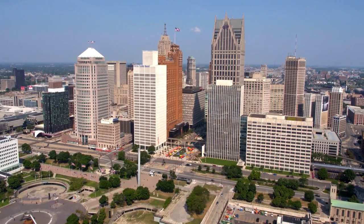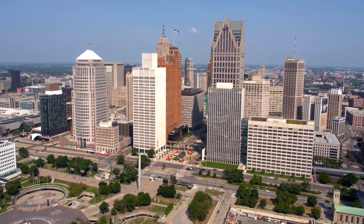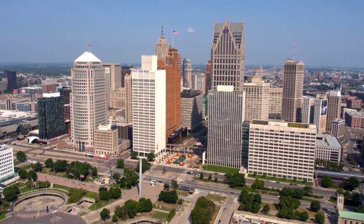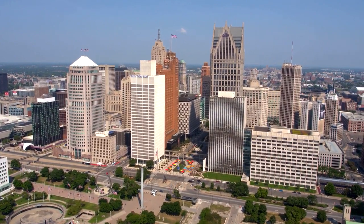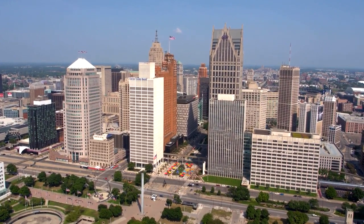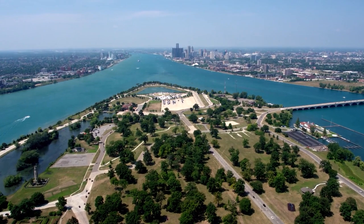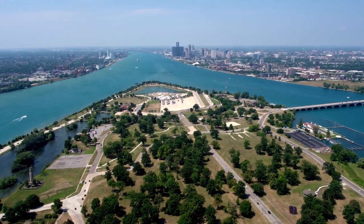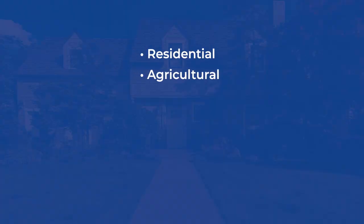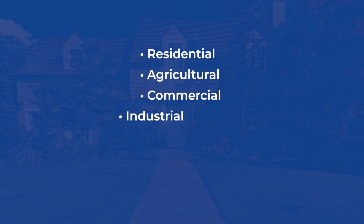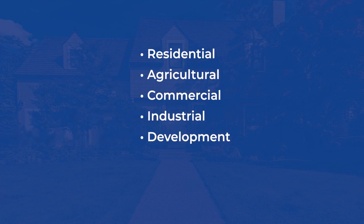In the state of Michigan, assessors classify real property into six categories based on what the land is used for. Those real property classifications are residential, agricultural, commercial, industrial, development, and timber cutover.